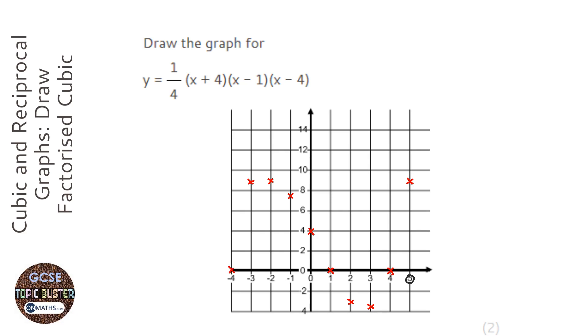Now because this is cubic, cubic graphs look like this, they go up, then down, then up again, or down, then up, then down again, or they just kind of hover and then go up like that. And this is what this looks like, it looks like it goes up, then down, then up again.